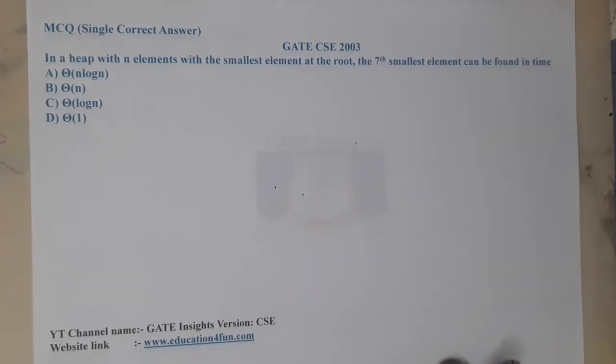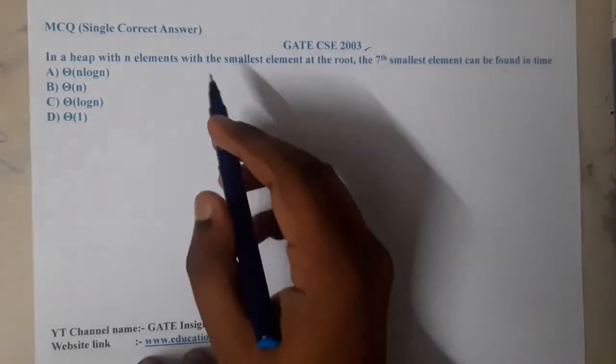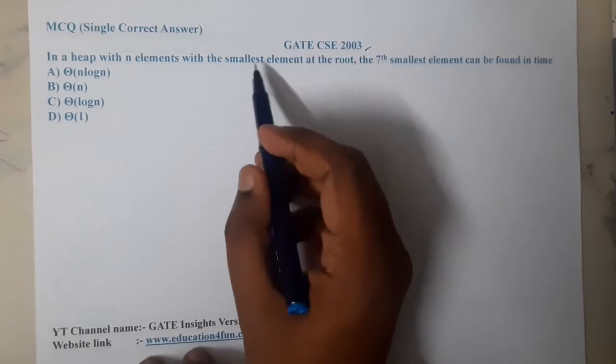Hello guys, we are back with our next lecture. In this lecture, let's go through the next question. This question belongs to GATE CSE 2003. The question is: in a heap with n elements with the smallest element as the root,